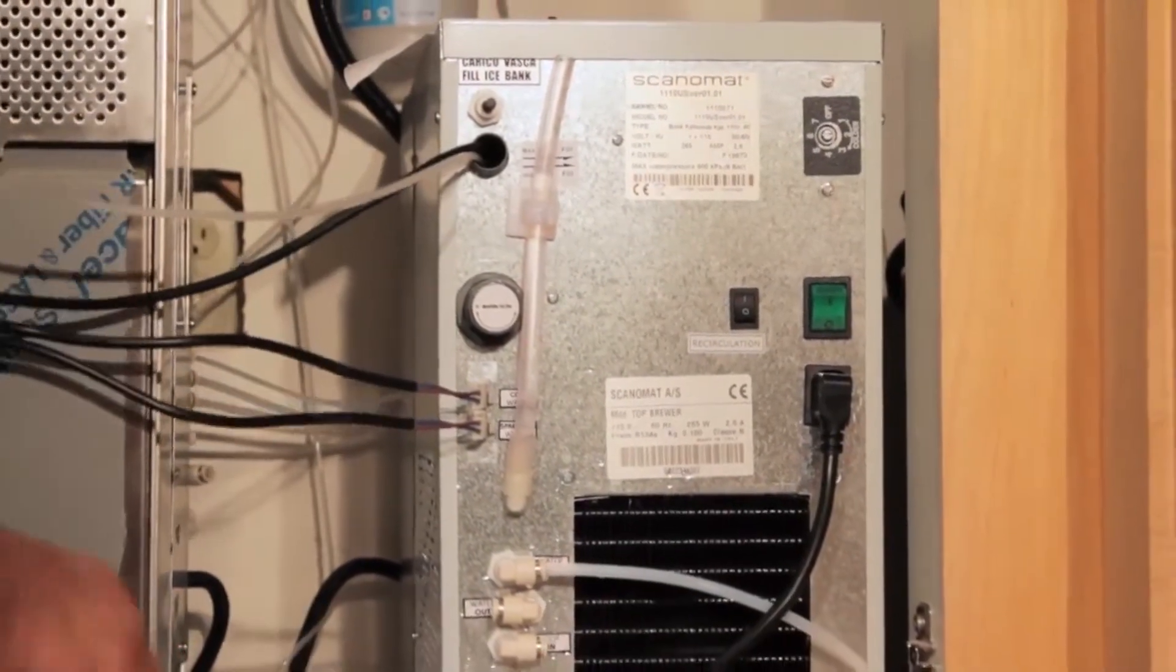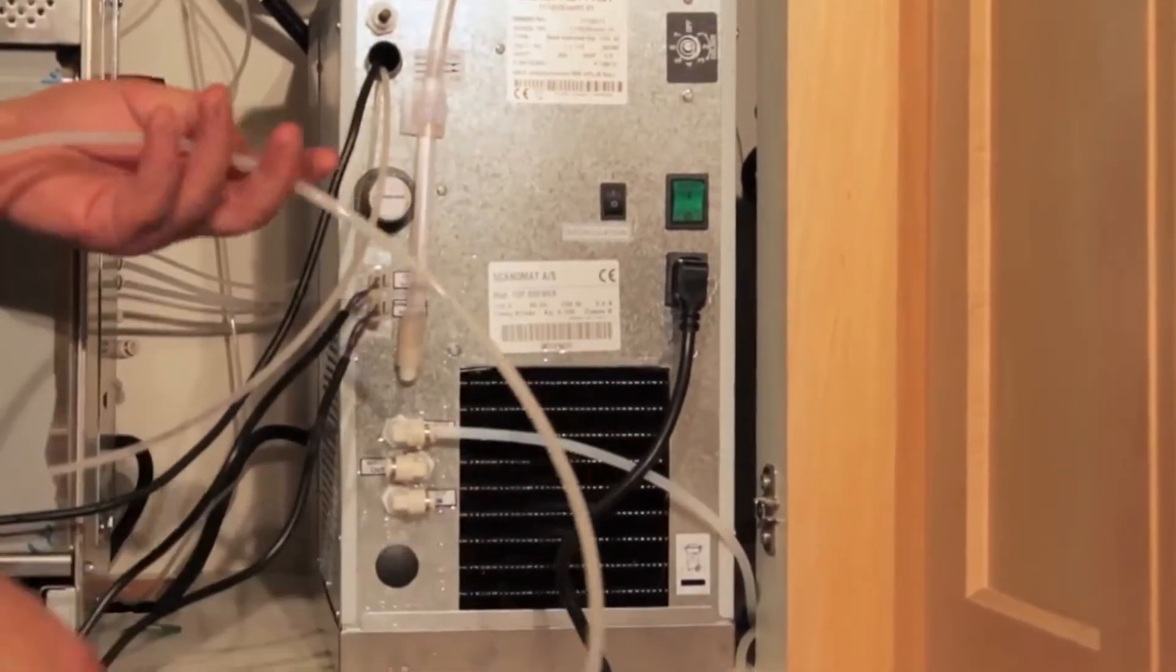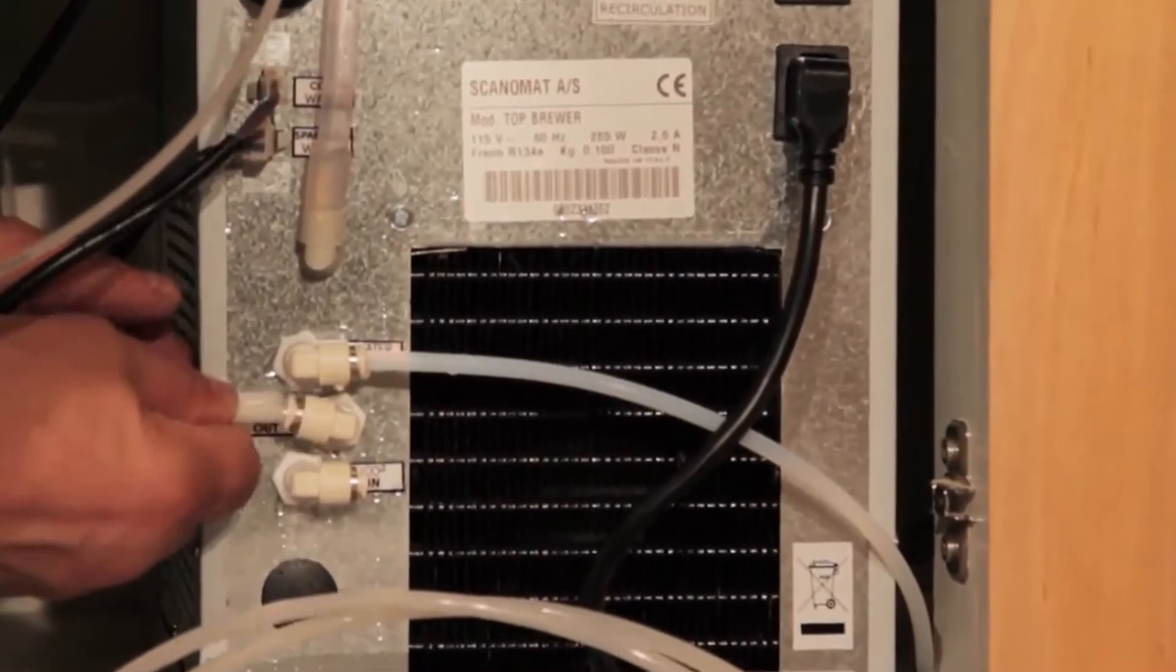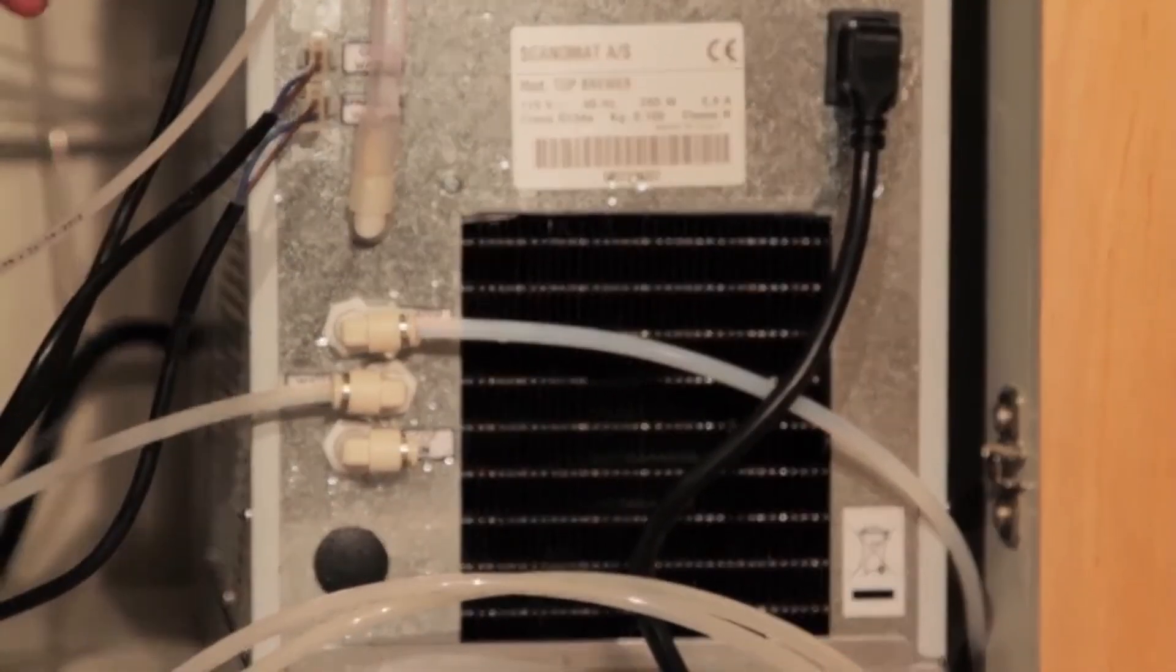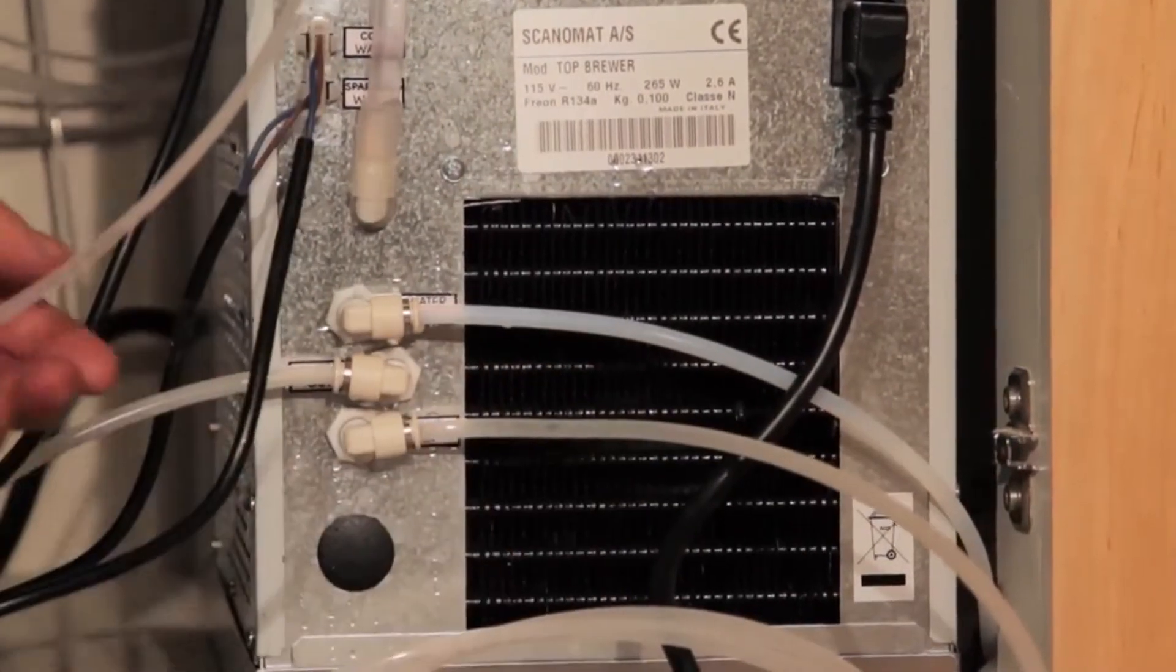We have a couple more connections: our outlet water connection and our CO2, and that goes right into that flow meter that came in the filter kit.